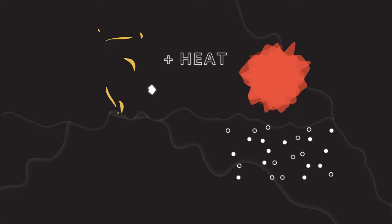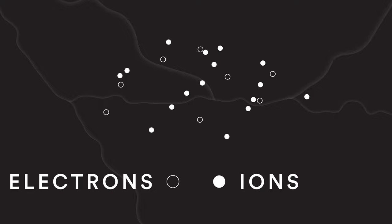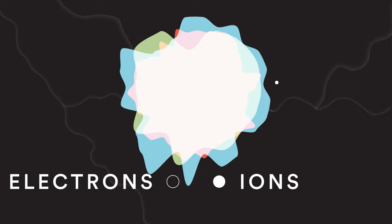Sometimes, plasmas are also referred to as a soup of charged particles, where electrons and nuclei, also called ions, go around interacting with each other, but not bound in the form of an atom.